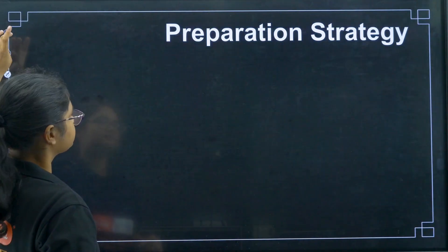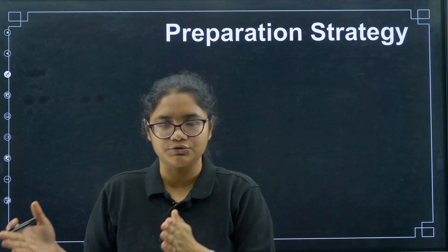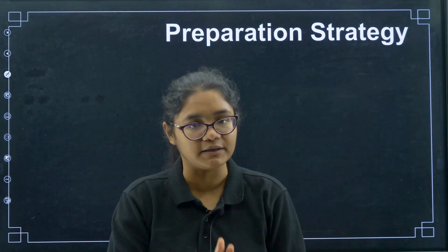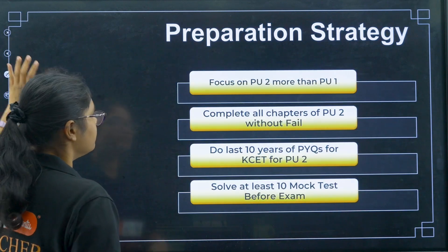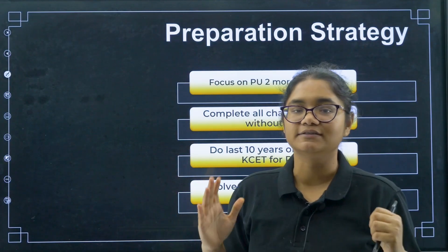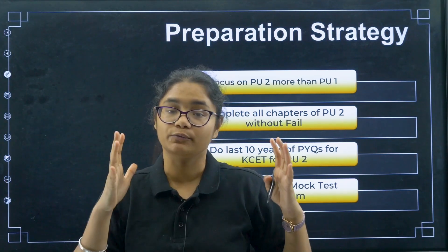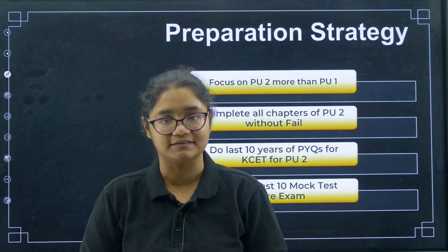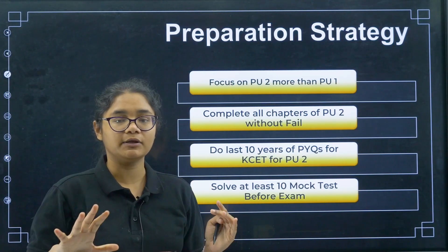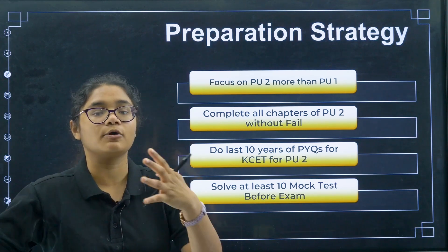Now let's move to our preparation strategy. We want a very good rank, and we've seen the distribution of PU2 and PU1. In all three subjects, more than 70 percent of questions will be asked from PU2. So the strategy is: focus more on PU2 than PU1. Many of you are worried that your PU1 syllabus is not done — please leave that tension. If you do PU2 syllabus very well and get at least 40 plus out of 60 in all three subjects, you can get a very good rank.